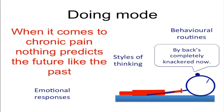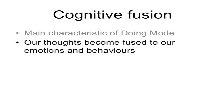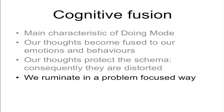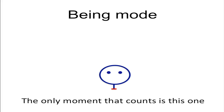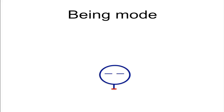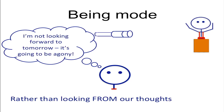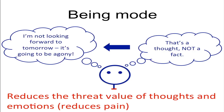The problem with this is something called cognitive fusion, whereby our thoughts become fused to our emotions and our behaviours, and our thoughts become distorted because they want to protect the schema. Consequently we overthink the problem and we believe what we hear our minds saying. Being mode, on the other hand, is about being in the moment. We tend to look at the world from our thoughts and make predictions from them, but being mode encourages us to look at our thoughts. It's easy to get bullied by our thoughts — when we look at them, we can let them go.